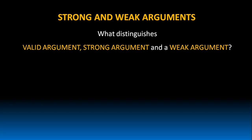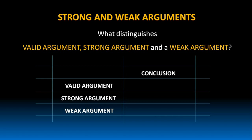What actually distinguishes among valid argument, strong argument and weak argument? Let us try to understand this with the help of a table. In a valid argument, the conclusion is always certain — if the premises were to be true, then the conclusion must necessarily follow. But in a strong argument, the conclusion has a high probability to become true. But in a weak argument, the conclusion has got a very low probability for it to become true.